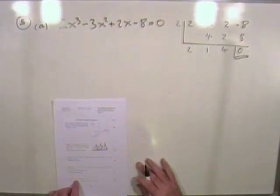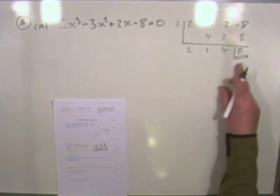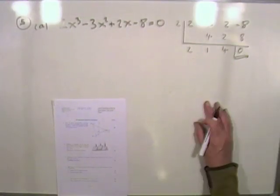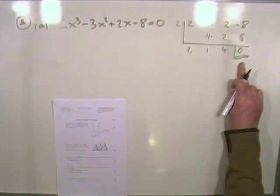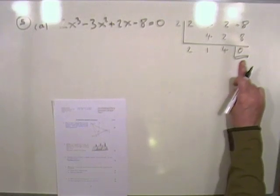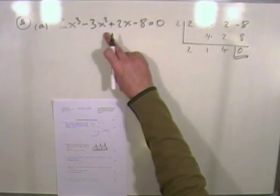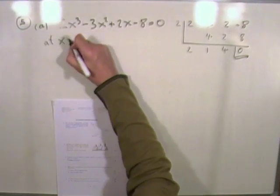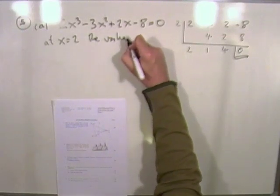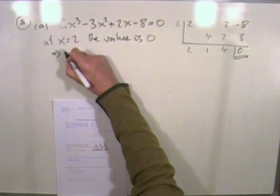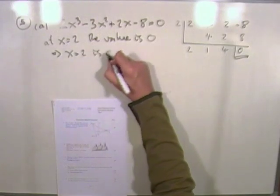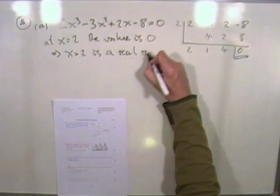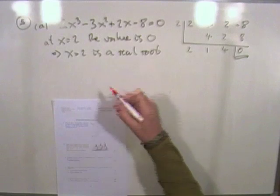Right, now it's talking about roots, not factors. So I'm going to use that as the value of the function, because that serves two purposes. If it's considered as a division, then that's the remainder. But the value of that remainder is also the value of the function, when x is the value 2. So I'll say this. At x equals 2, the value is 0, which means x equals 2 is a root. Although, since it says find a real root, I'll put as a real root.